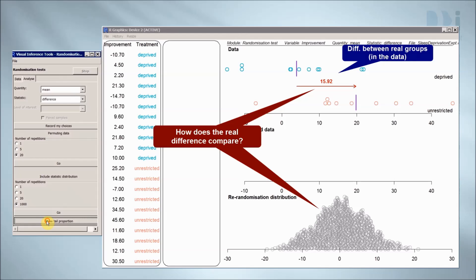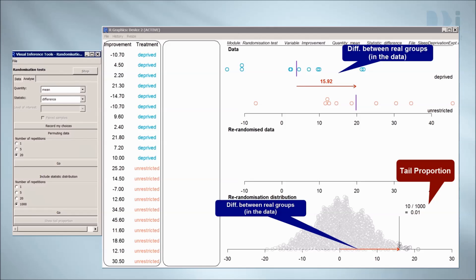So how does the real one from the experiment compare with what we got by forming artificial groups randomly? Here the real group difference, 15.92, is laid on top of the ones we got by randomizing, the ones we got just by the luck of the draw. Well it's clear that randomization alone hardly ever gives us anything as big as 15.92. We'll ask for the tail proportion to see how rare this is. It tells us that the luck of the draw gave us 15.92 or bigger, ten times out of a thousand, that's one percent of the time. Put another way, random reassignment almost always gave us values smaller than this. 99% of the time they were smaller.